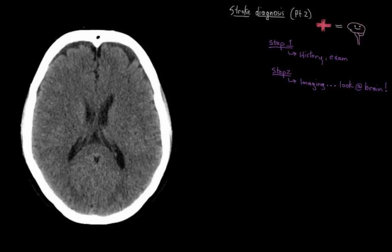What sorts of scans can be done to look at the brain? First up, you'd likely get an immediate CT scan, or computerized tomography scan, which is basically a special type of x-ray that takes lots of images from lots of different levels and angles.